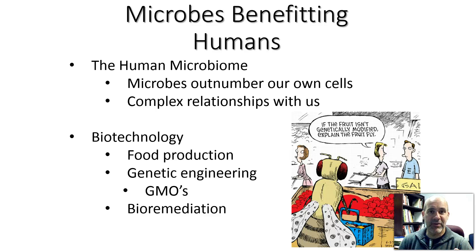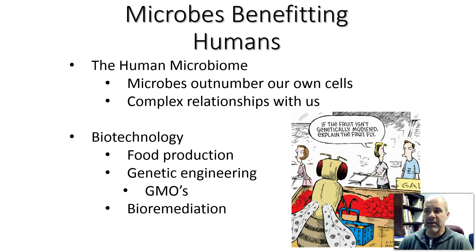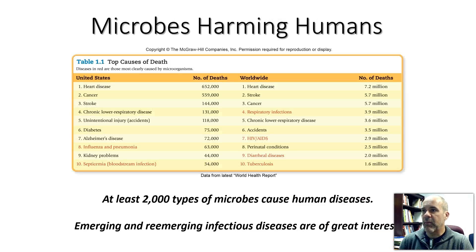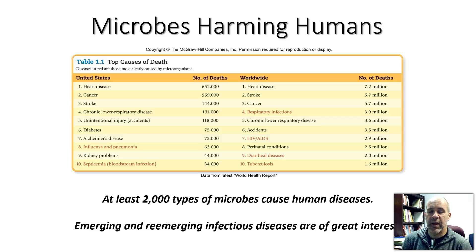Vaccinations are another topic I'm going to get on my soapbox about in this class. Bioremediation is using microorganisms to help clean up environmental problems. For example, after the oil spill in the Gulf of Mexico, it turned out there were naturally occurring bacteria in the Gulf that were able to digest most of that oil spill, cleaning it up much faster than initially expected. There are also microorganisms that may be useful for cleaning up other toxic chemicals in waste dumps, or even radiation. That's another very hot area of biotechnology.